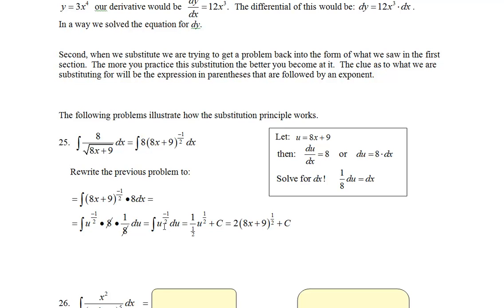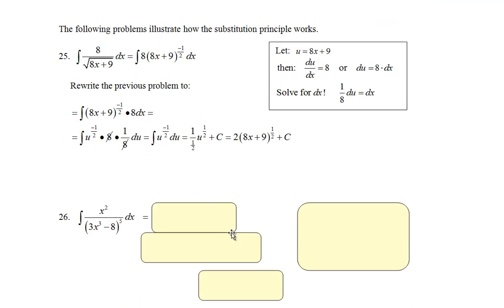Clean this up. I now have the integral u to the negative 1/2 du. We have done this before. So my coefficient is 1. Add 1 to my exponent, repeat down here, clean this up. And I'd end up with 2u to the 1/2 plus c. But remember, u is the 8x plus 9.